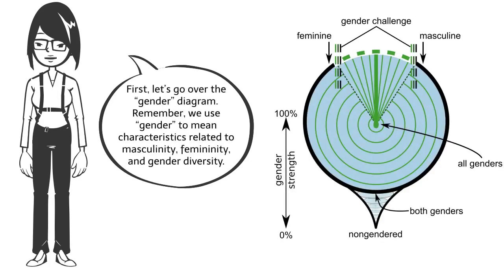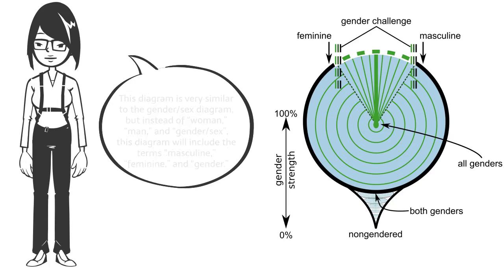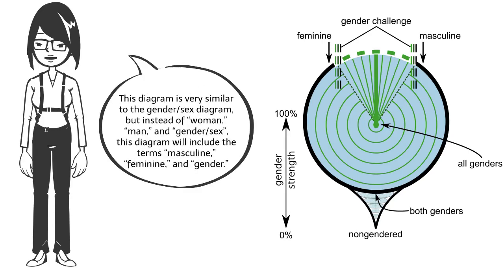First, let's go over the gender diagram. Remember, we use gender to mean characteristics related to masculinity, femininity, and gender diversity. This diagram is very similar to the gender sex diagram, but instead of woman, man, and gender sex, this diagram will include the terms masculine, feminine, and gender.